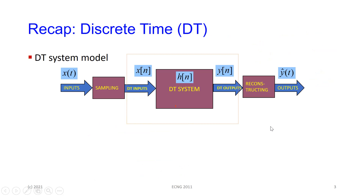The discrete time system — the real world is 99.99 percent continuous, so any inputs you get from the real world will be a continuous time signal. If you need to operate on it using a discrete time system, then we have to use sampling. We saw about that — what happens in sampling, how the process works — and then you get into the discrete time system, which is numbers.